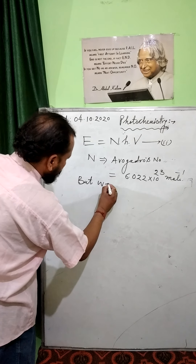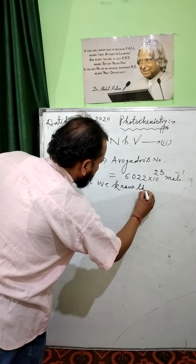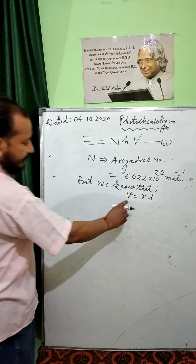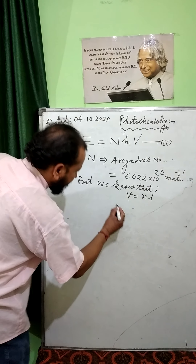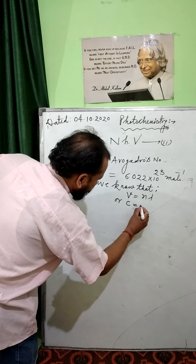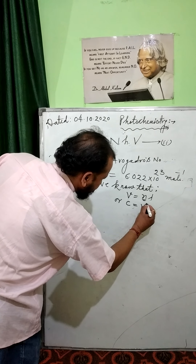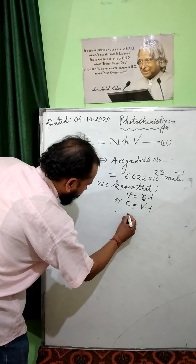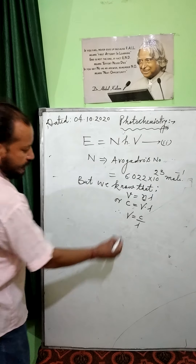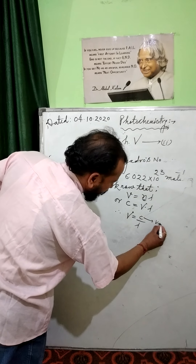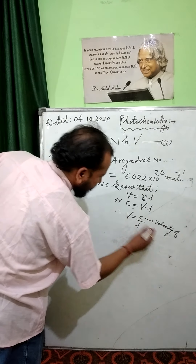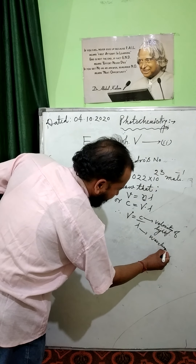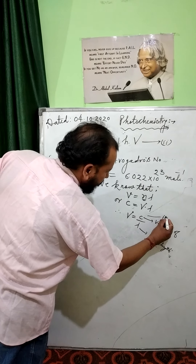We know that v = nλ, where v is velocity, n is frequency, and λ is wavelength. Similarly, this may be written as ν = c/λ, where ν is the frequency of light, c is the velocity of light, and λ is the wavelength of light used. Let this be equation number three.